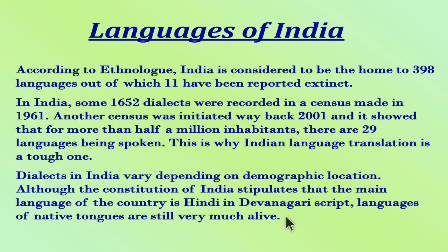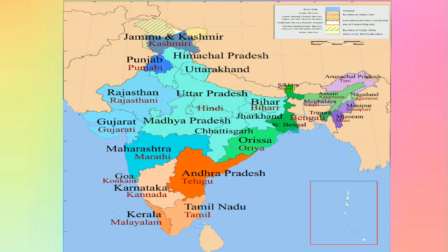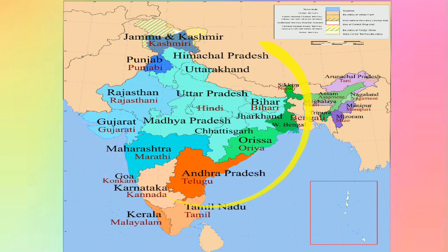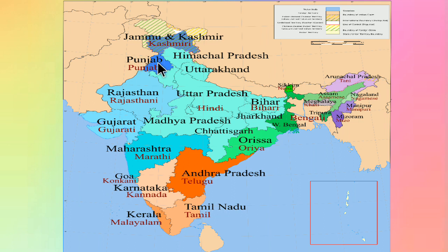Now we are going to learn about languages and states. In India, there are so many states and each state has different languages. Jammu and Kashmir — Kashmiri and Punjabi language. Punjab — Punjabi language. Rajasthan — Rajasthani.